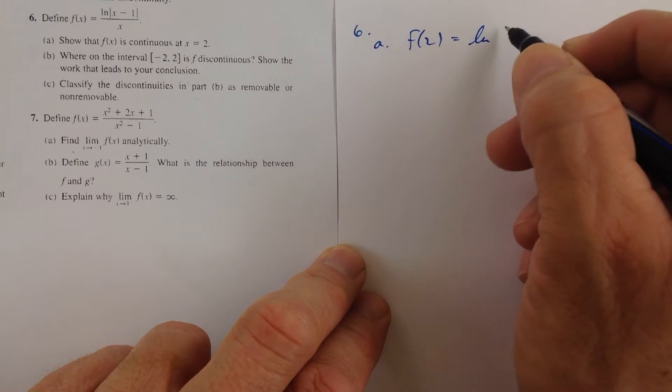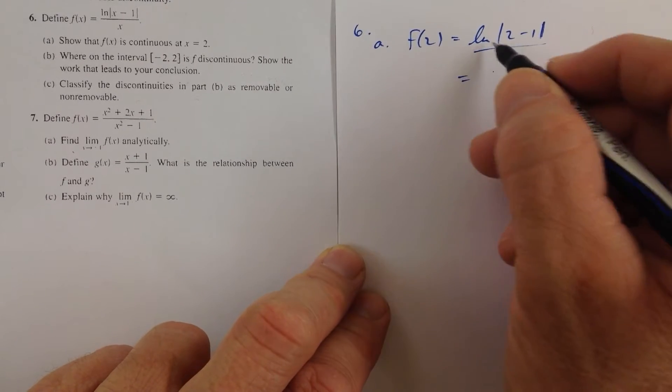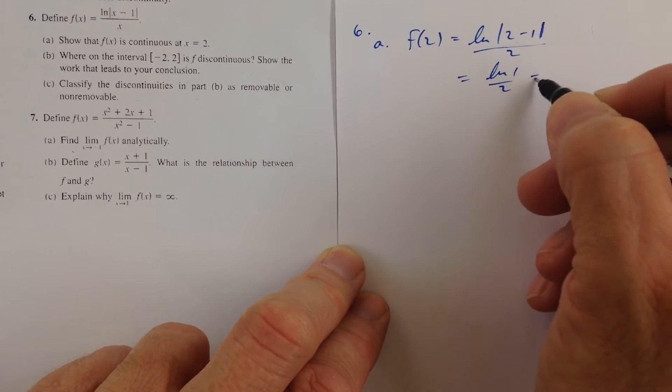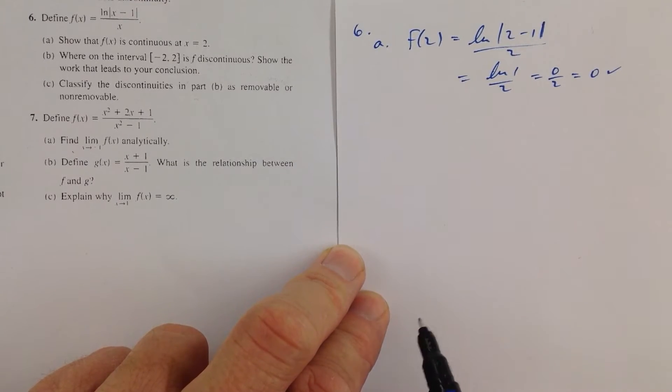f of 2 is ln of the absolute value of 2 minus 1, all over 2, which is equal to ln of 1 over 2, which is equal to 0 over 2, which is equal to 0, check. f of 2 does exist.